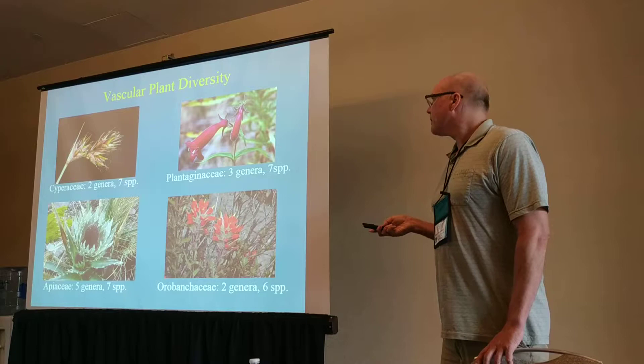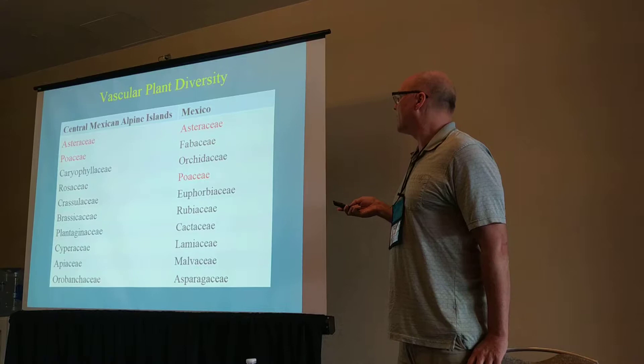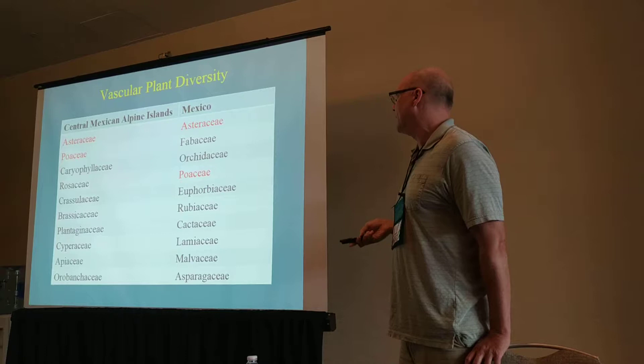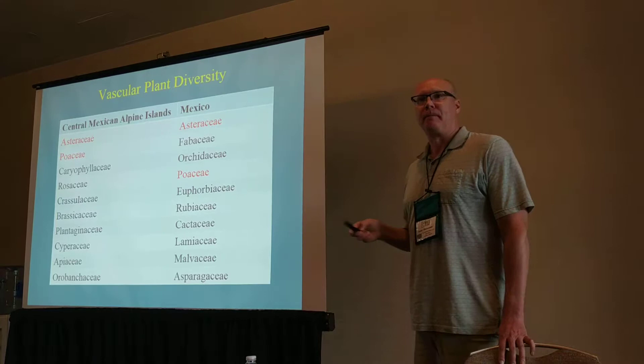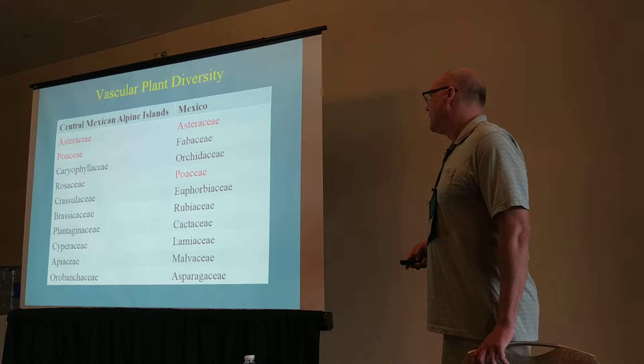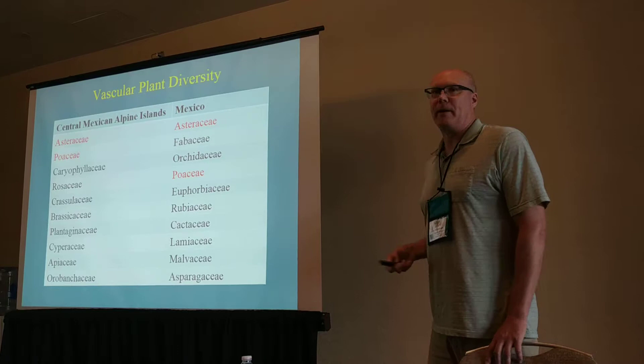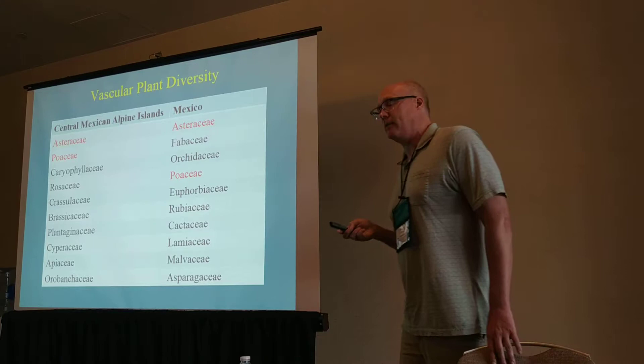Looking at the diversity in the alpine islands versus the largest families in Mexico overall, you can see only two families are similar between them, so the alpine flora is not really characteristic of the Mexican flora. Families that are very common in Mexico — the orchids, Cactaceae, Euphorbiaceae, and Malvaceae — are not represented at all, or in the case of the Rubiaceae, just a single species.